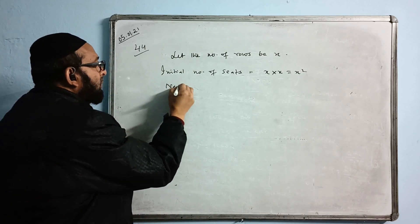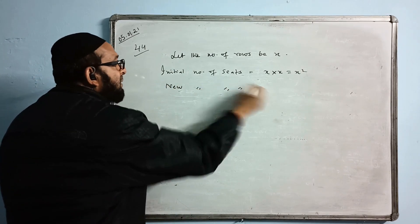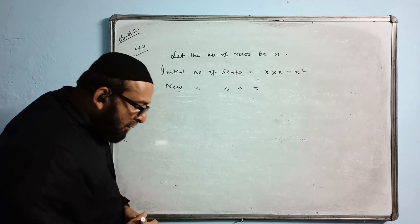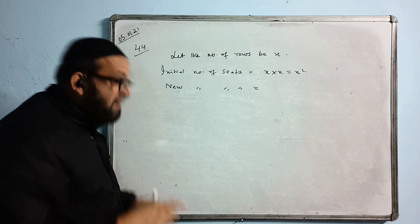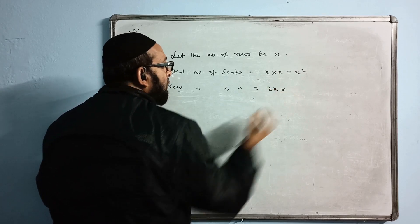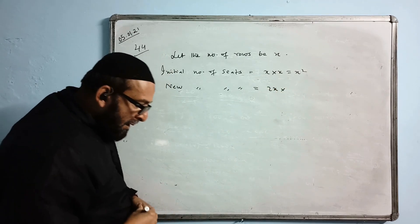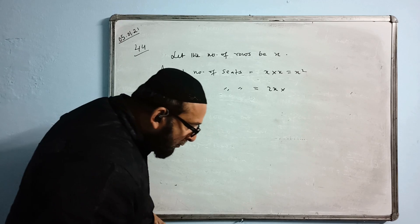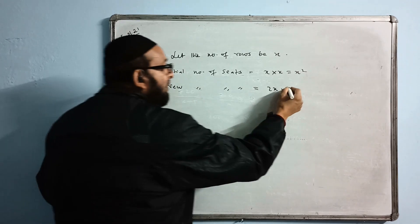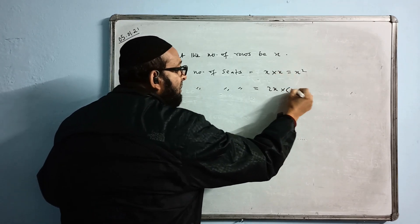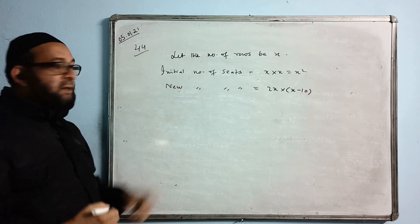Let us add new number of seats, after rearrangement. Now they are saying the number of rows has doubled, so the new number of rows is 2X. And the number of seats in each row was reduced by 10, so it's X minus 10. This is the new number of seats.